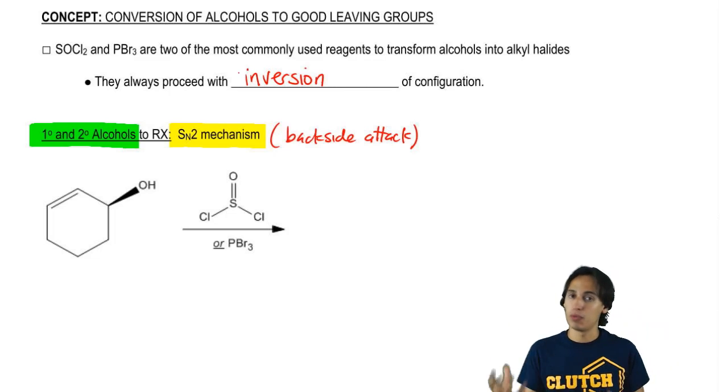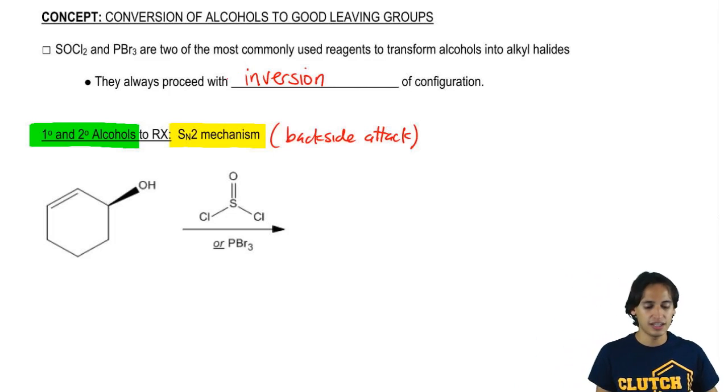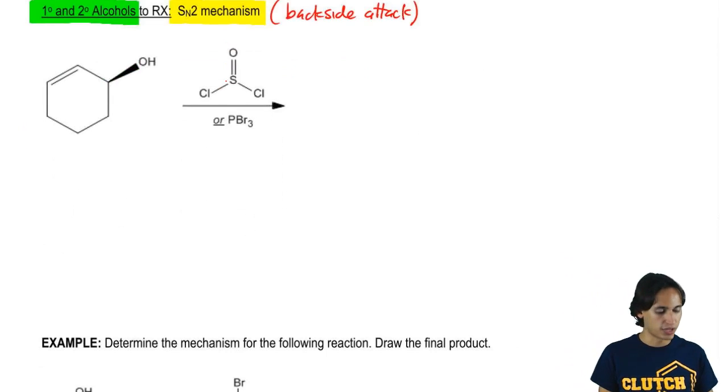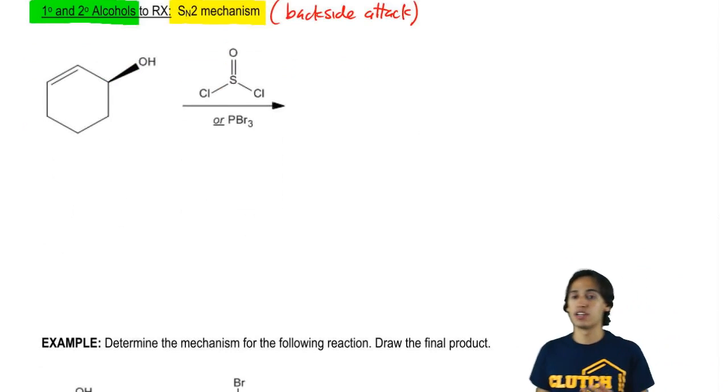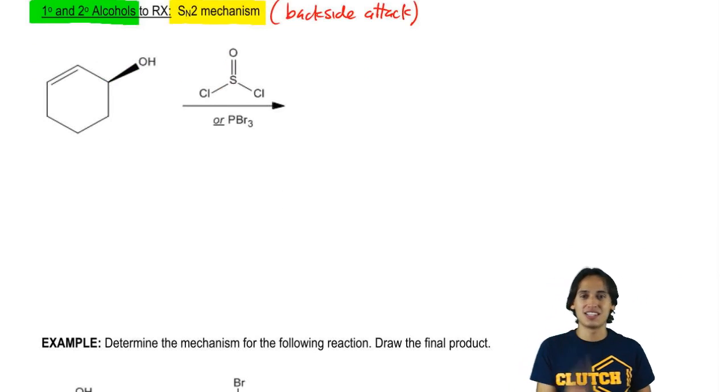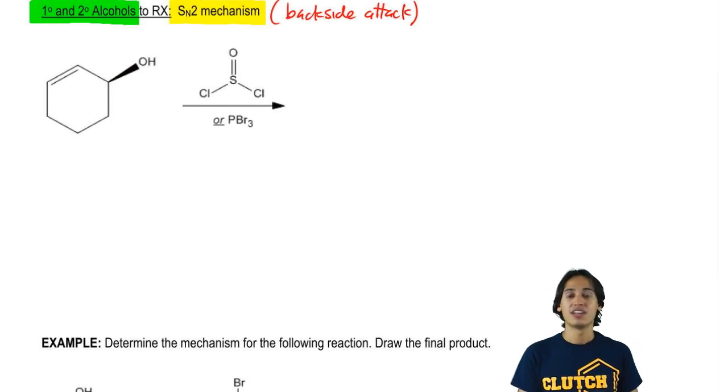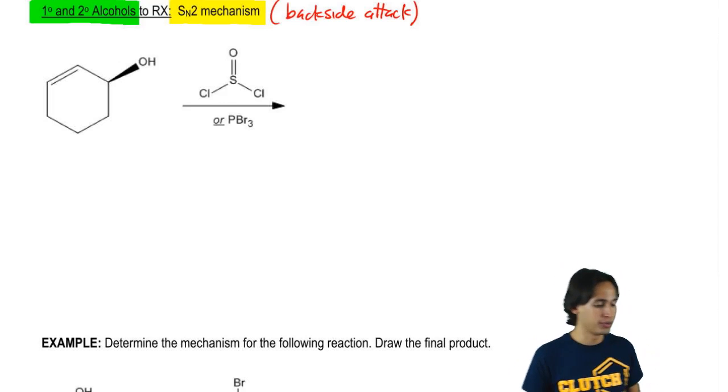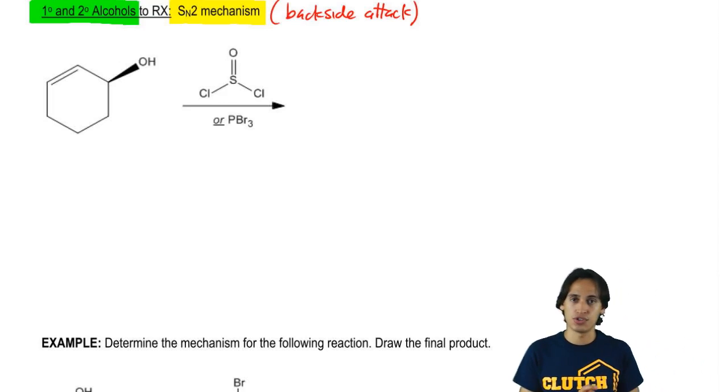Remember that inversion of configuration and backside attack go hand in hand. Anytime I say one, I'm always referring to the other. Let's analyze this mechanism. I'm going to show you the general mechanism for SOCl2, but the same thing applies to PBr3. I'm going to have you figure out the mechanism for PBr3 on your own.